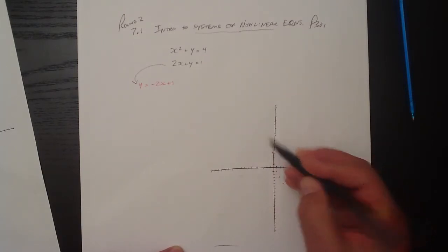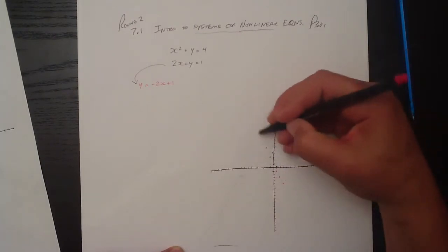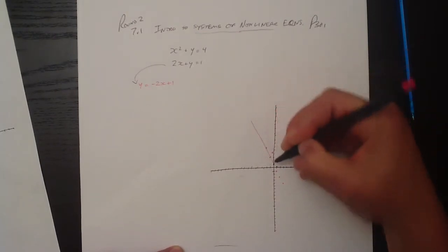And we can still get negative 2 as well by running by negative 1, rising by 2, negative 1, rise by 2. And we get this sort of a linear function which we can draw in.